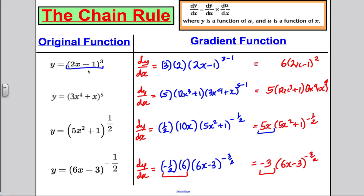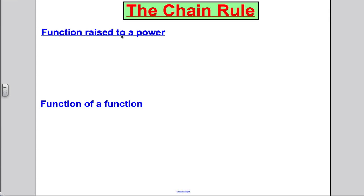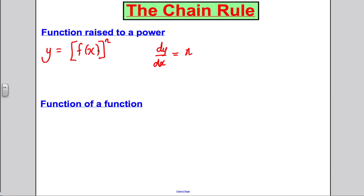With any complicated algebraic function raised to a power, we bring down the power, multiply by the derivative of the bracket, and raise the expression in the brackets to one less power. Let's formalize this as the function-raised-to-a-power rule: if y = [f(x)]ⁿ for any number n, then dy/dx = n · f′(x) · [f(x)]^(n−1). You bring down the power, multiply by the derivative of the bracket, and reduce the power by 1.